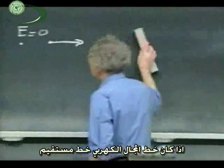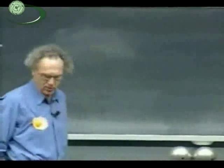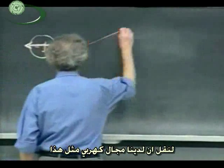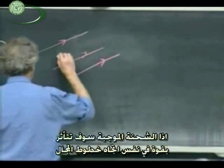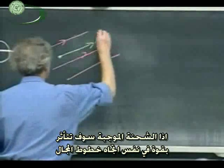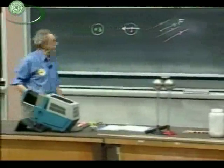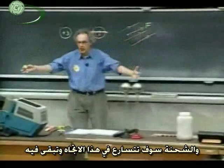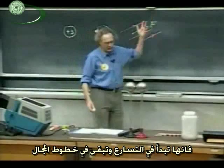If an electric field line is straight — say we have fields like this, straight E field lines — and I release a positive charge there, then the positive charge would experience a force exactly in the same direction as the field lines, because the tangential direction is in the direction of the field line. It would become accelerated in that direction and would always stay on the field lines. If I release it with zero speed, it starts to accelerate and stays on the field lines.